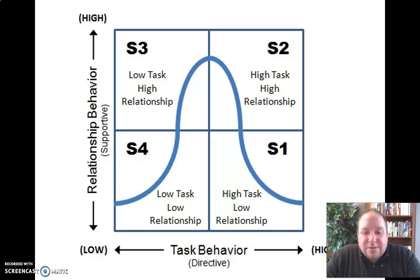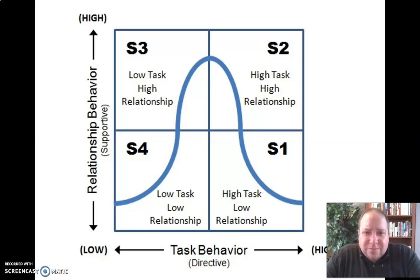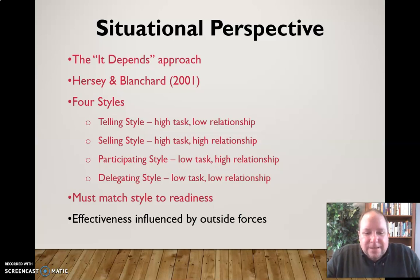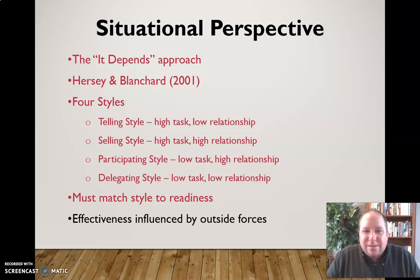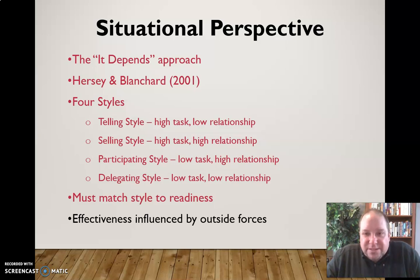The telling style has high task and low relationship, falling in the S1 box on the chart. At any moment, the group could need any one of these styles — you have to read what the group needs and what will be most effective in that particular situation. This does make it complicated but also gives the leader flexibility. It is also influenced by outside forces you can't control, such as whether you were assigned to the group, the economic situation, or supply and demand factors, all of which affect the group's readiness.